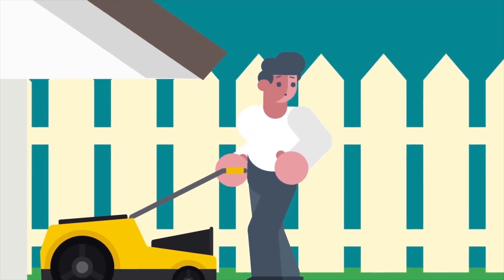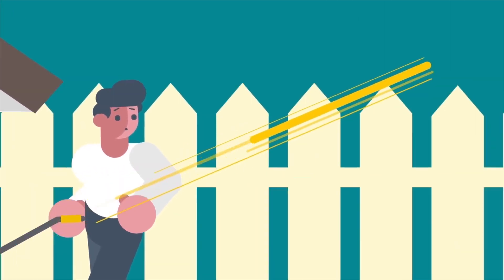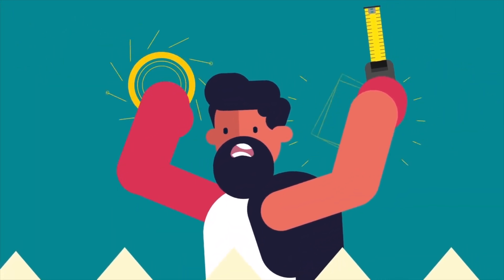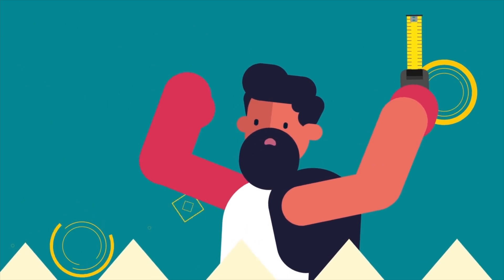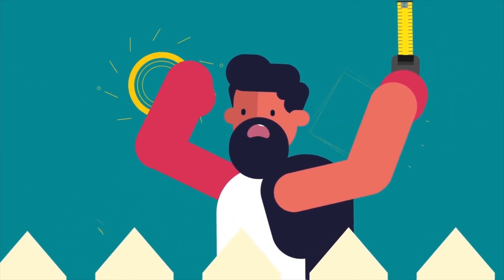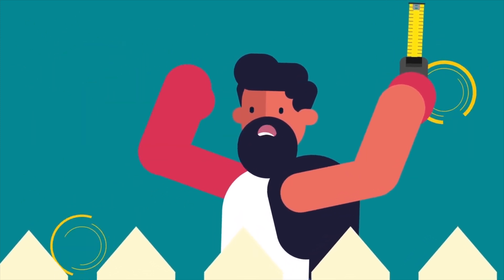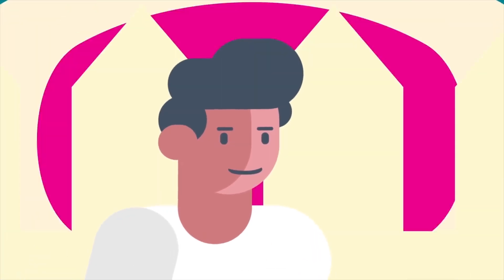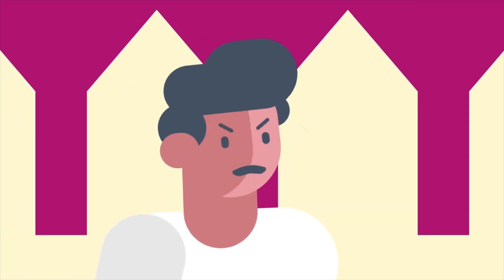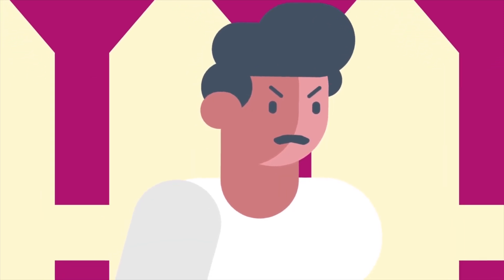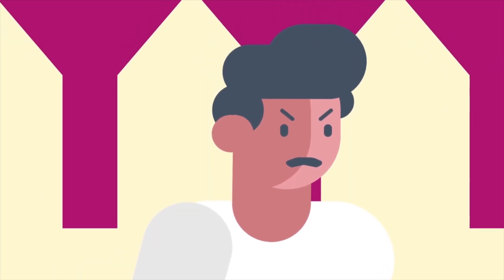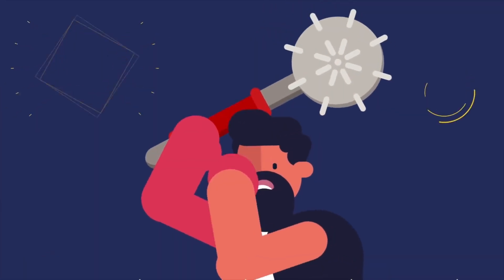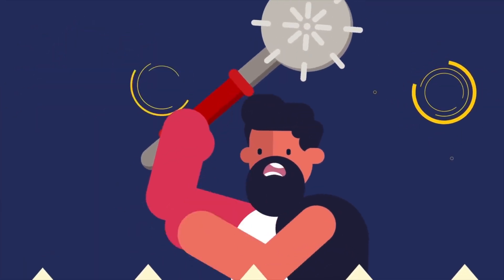You're installing some fencing in your backyard. Suddenly, your neighbor shows up and claims that you installed the fence 6 inches too far into his property. Without warning, he tosses a glove at your feet and brandishes a mace, challenging you to a trial by combat.